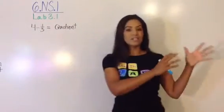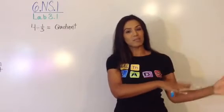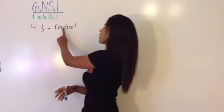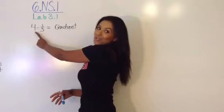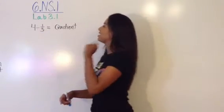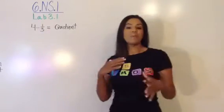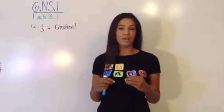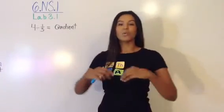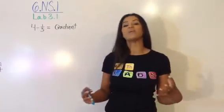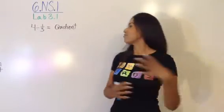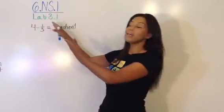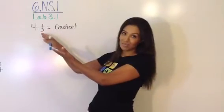Remember, product is the answer when you multiply, and you also have sum and difference for adding and subtracting respectively. But quotient is the answer when you divide. Now, many of you remember this from 5th grade, but we're going to use the visual model so that we really understand the concept. We get an idea of what's going on and then we can further our studies involving a fraction divided by a fraction that's not a unit fraction.